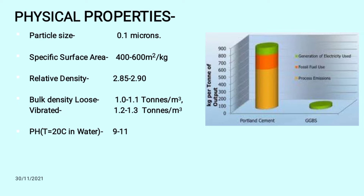What are the physical properties of GGBS? Its particle size is 0.1 microns. Its surface area is 400 to 600 metres squared per kg. The relative density lies between 2.85 to 2.9. Its bulk density when conditioned loose is 1 to 1.1 tonnes per metre cube, and when in vibration, 1.2 to 1.3 tonnes per metre cube. The pH is 9 to 11.